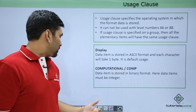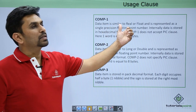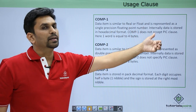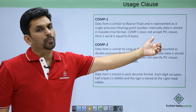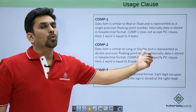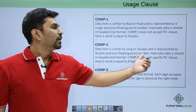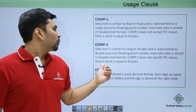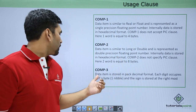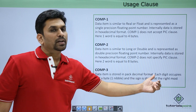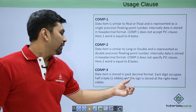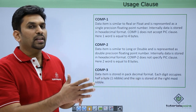COMP-1 is similar to float and is represented as a single-precision floating point number. Internally data is stored in hexadecimal, and COMP-1 does not accept a PIC clause. One word equals 4 bytes. COMP-2 is similar to double and is represented as a double-precision floating point number. Internally data is stored in hexadecimal, and COMP-2 also does not use a PIC clause — two words equal 8 bytes. COMP-3 stores the data item in packed decimal format: each digit occupies half a byte (one nibble), and the sign is stored in the rightmost nibble.